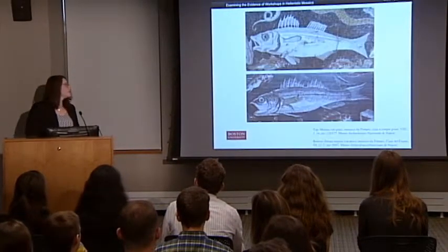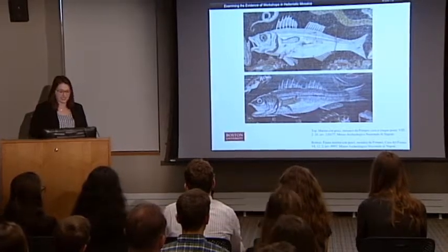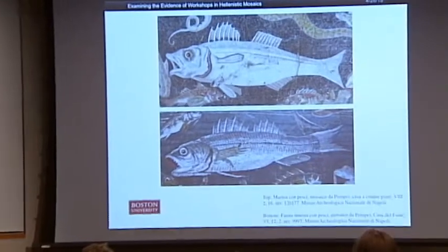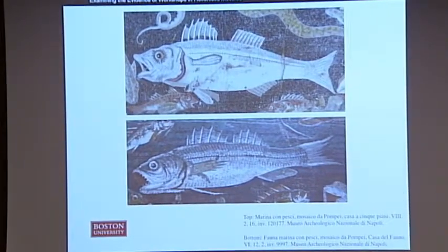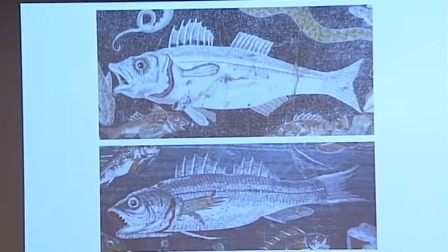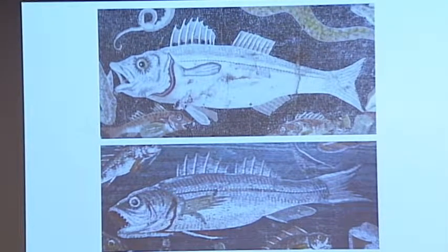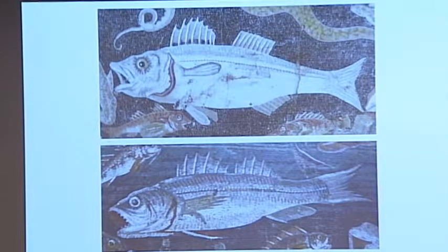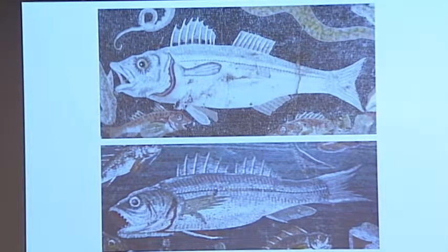Little is known today about the process of creating these mosaics — how they were commissioned, how the process of making them went — because we have very little textual information about this process. Fewer than ten artists' names are known from mosaics of the Hellenistic world, whereas we have lots of information about painters and sculptors from this time period written down. There is virtually none about mosaics, so this leaves us to the mosaics themselves to look for information, requiring a great deal of visual analysis.